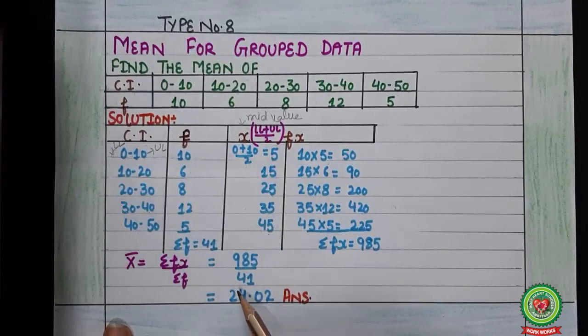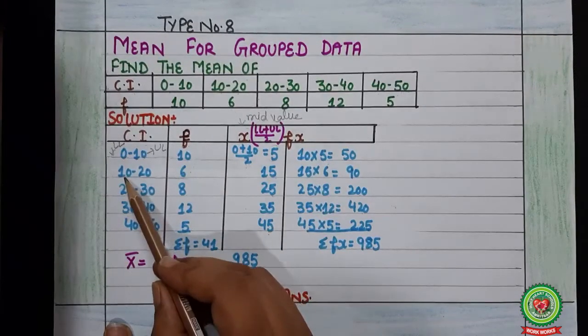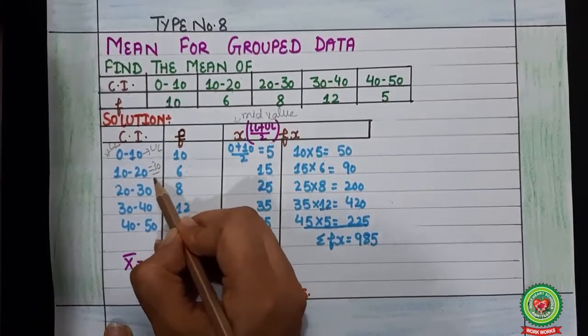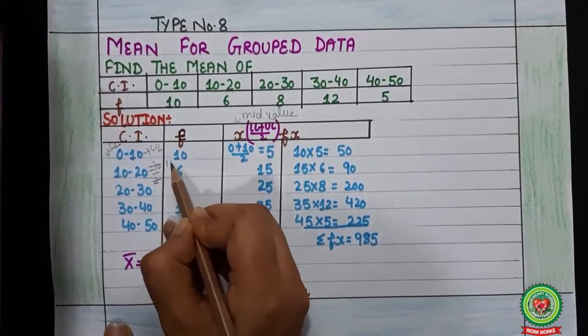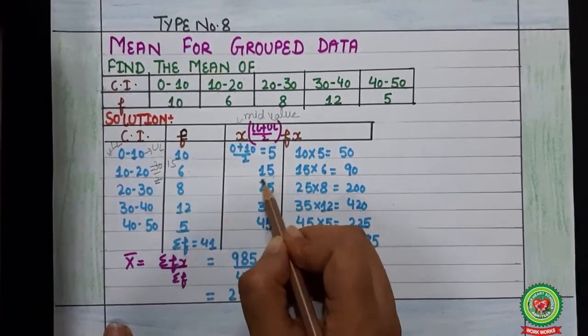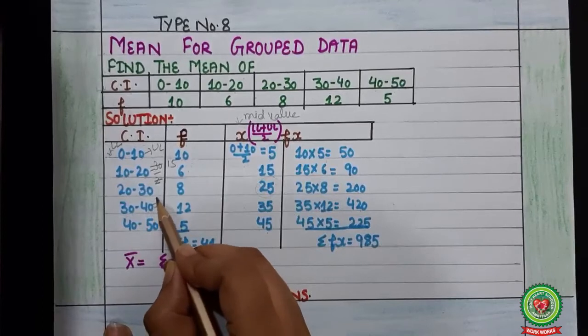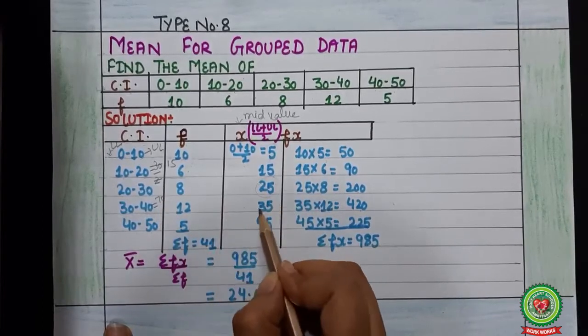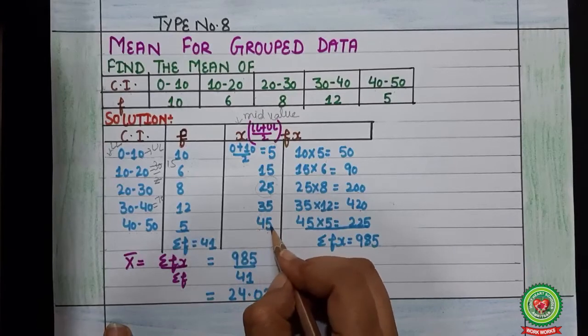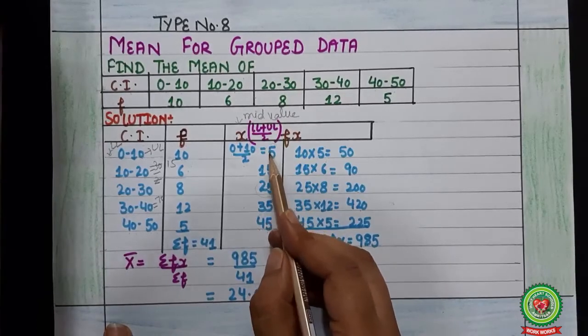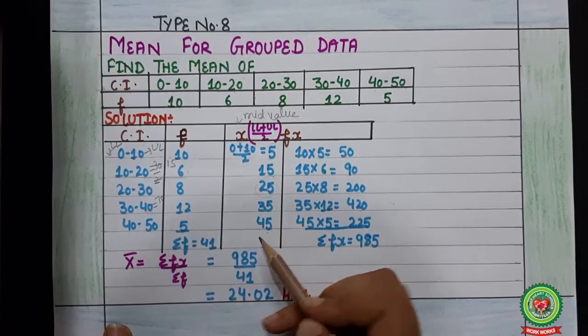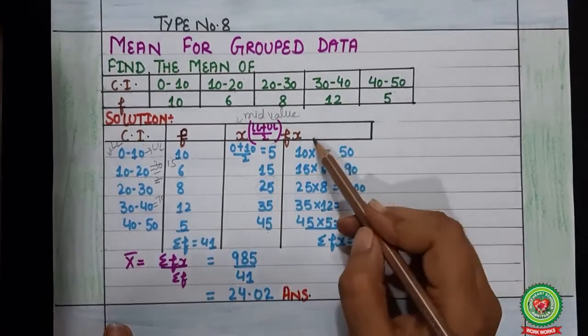Now similarly we can find other mid values as well. 10 plus 20 equals 30 divide by 2, it will become 15. Adding these both will get 50 upon 2, 25. Adding 70 divide by 2, 35. 90 divide by 2 it will become 45. So this was all about the mid values of this class interval.